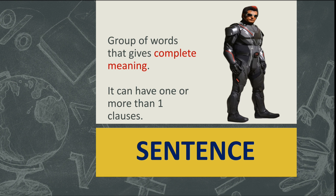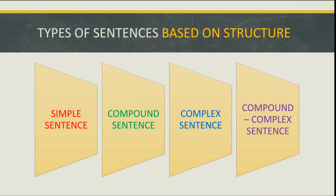Now moving on to sentence — like the Chitti robot from Robo 2.0, which can think and act on its own, a sentence is a group of words that gives complete meaning. It can have one or more clauses. If a sentence has only one part, it comes under an independent clause or simple sentence. The types of sentences based on structure are: simple sentence, compound sentence, complex sentence, and compound-complex sentence. In a simple sentence there is only one independent clause; in a compound sentence there are two independent clauses joined by a coordinating conjunction.